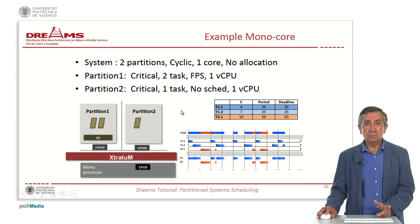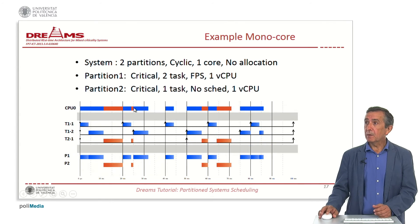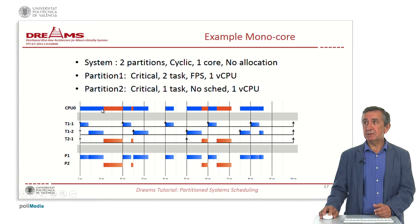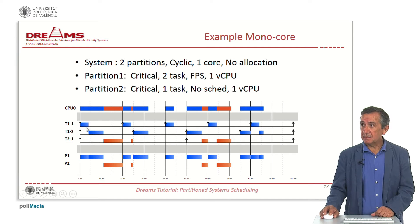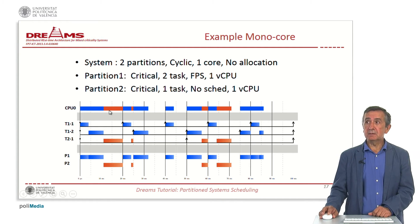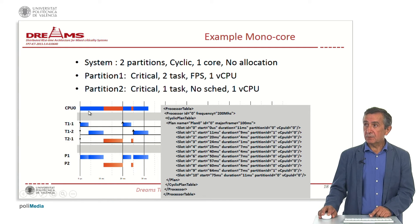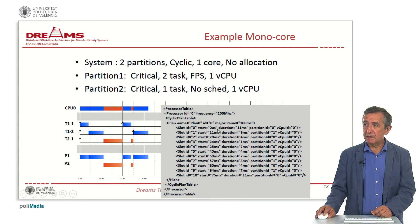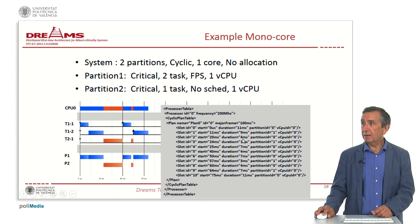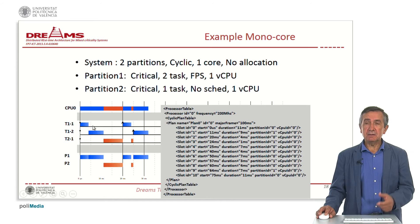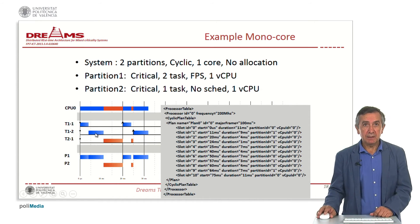This is a possible schedule for that system. If we enlarge it, we can see that CPU zero executes partition one — where the OS schedules the internal tasks — and then CPU zero executes the second partition. We can see the execution of the different partitions on that core. The cyclic schedule description shows, for instance, a major frame of 100 milliseconds, starting at zero offset with a duration of 11 microseconds, executing partition zero.